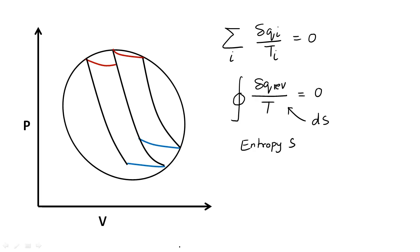First, let us get some practice in calculating the change in entropy for a couple of processes. The first process for which we will calculate change in entropy is the isothermal expansion of an ideal gas from P1 V1 to P2 V2.